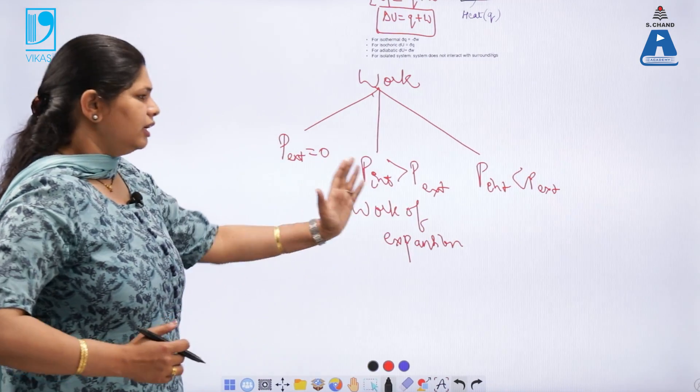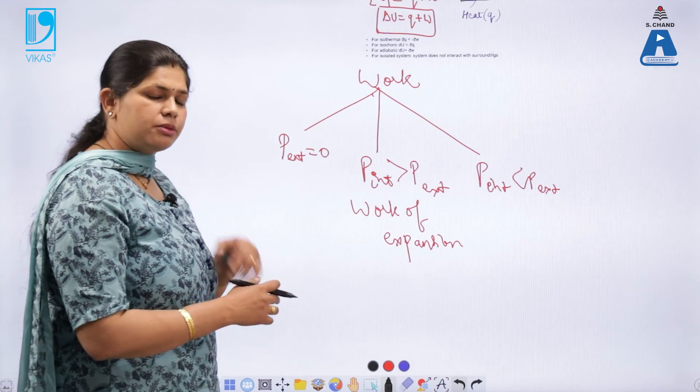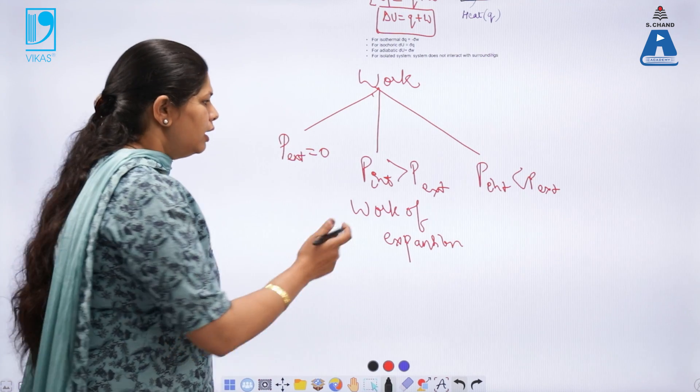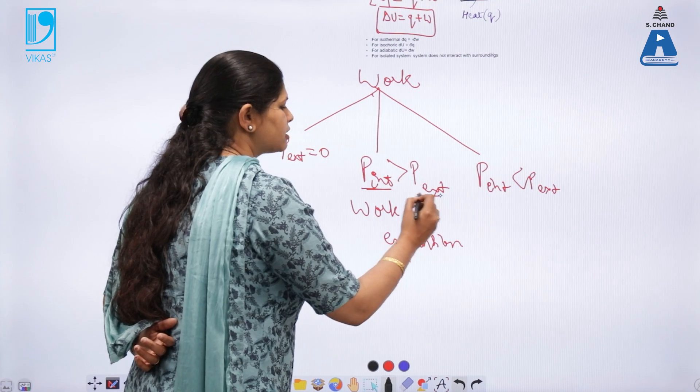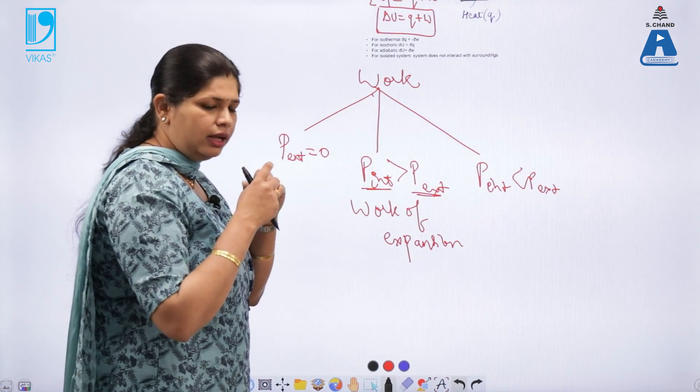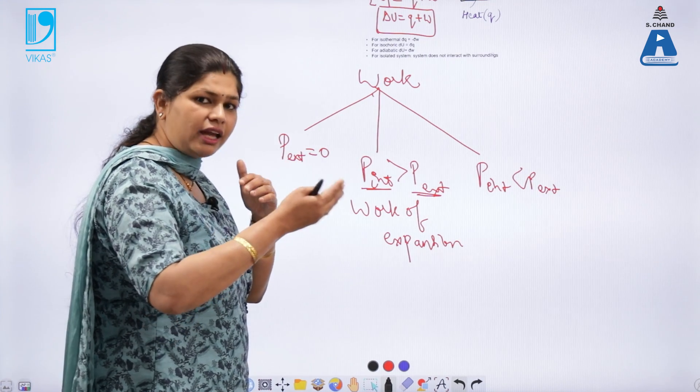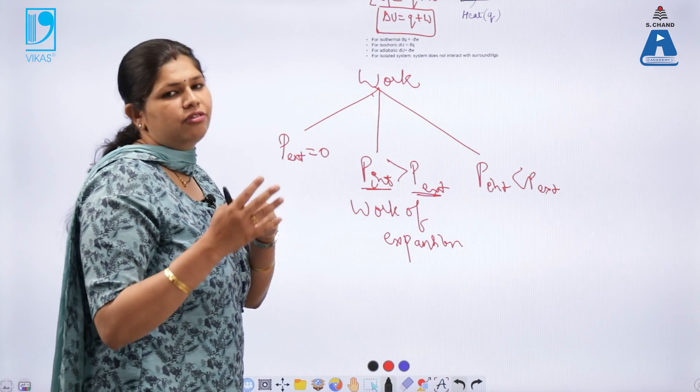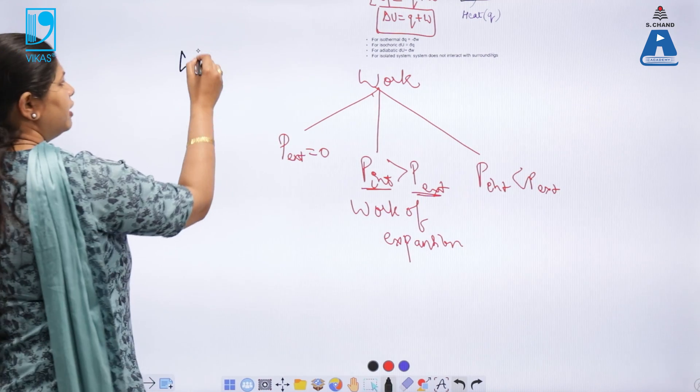Now, what is the reversible work and irreversible work? Reversible work, as I said, it is a very small change. So, the value between P internal and P external will very minutely be different from one another. And the expansion or compression work will take place, but it can be reversed. Whereas, in the irreversible work, there will be a finite changes in the pressure.